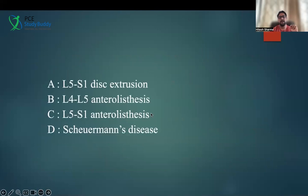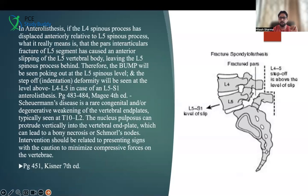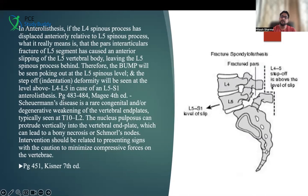Looking at the picture: there is a pars interarticularis fracture at L5. L5 has moved anteriorly in relation to S1, the sacrum. Because of the fracture, only the vertebral body goes forward and the spinous process stays behind. While at L4, the whole vertebra along with the spinous process has moved forward. So when you're palpating, you will see a gap at L4 and then a bump at L5. The question could be asked either way — where you see the depression it will be at L4, where you see the bump it will be at L5.